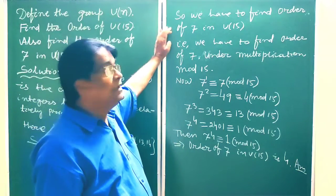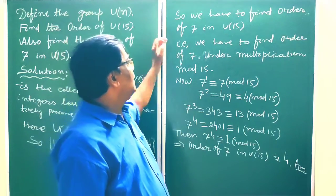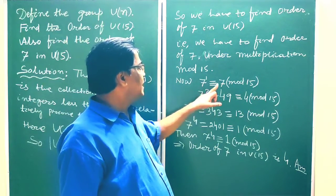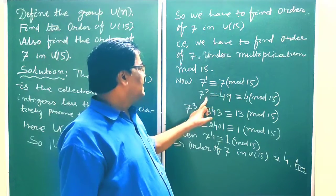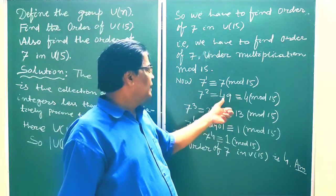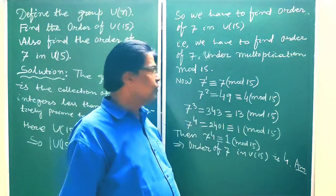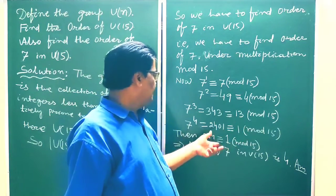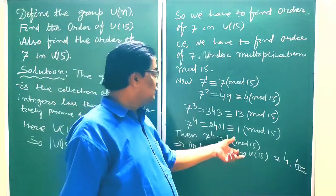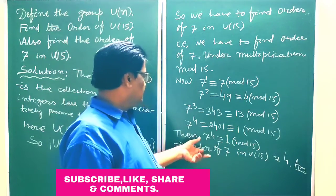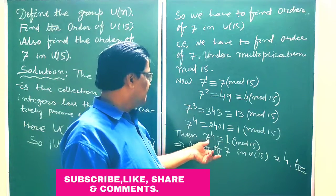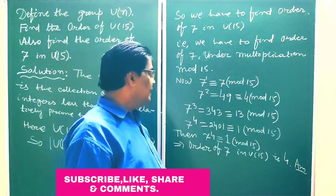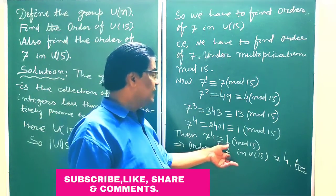Now we find the order of 7 in U of 15, meaning the order of 7 under multiplication mod 15. We have: 7 to the power 1 ≡ 7 (mod 15), 7 squared ≡ 4 (mod 15), 7 cubed ≡ 13 (mod 15), and 7 to the power 4 ≡ 1 (mod 15). Therefore the order of 7 in U of 15 is 4, because we first get 1 at the 4th power.